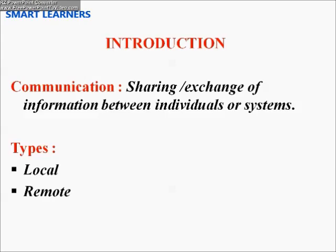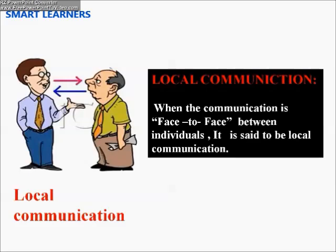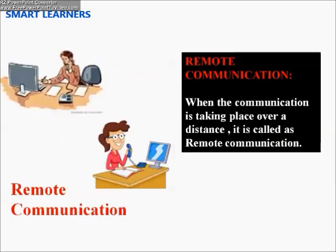There are two types of communication: local communication and remote communication. Local communication is when communication happens face to face between individuals — there is no distance involved and the two persons are present next to each other. Remote communication is when communication takes place over a distance, such as using telephones, sending emails, or telegraph. 'Tele' means distance in Greek.